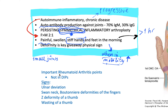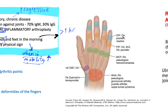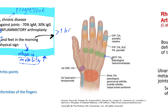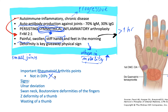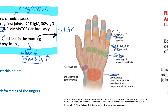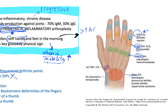Some important points: yes, rheumatoid arthritis affects small joints — mainly the hands and feet. It mainly affects the metacarpophalangeal joints (MCPs) as well as the PIPs, which are the proximal interphalangeal joints. It also affects the wrist. However, it does not tend to affect the DIPs, the distal interphalangeal joints. This is very important and will help differentiate rheumatoid arthritis from osteoarthritis.